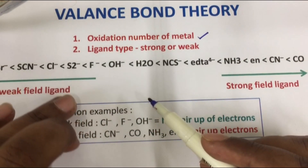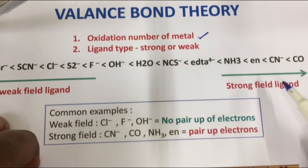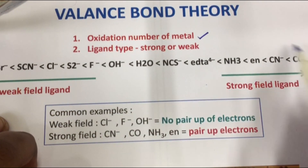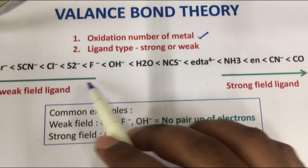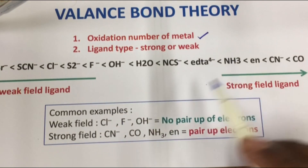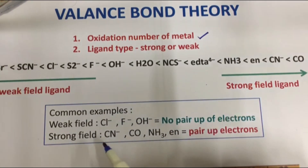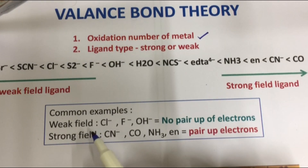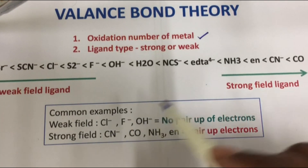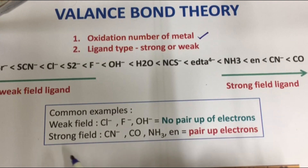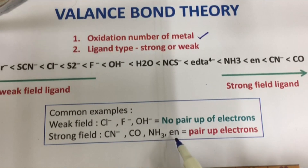On the left side of the Spectrochemical series, we have the weak field. On the right side, we have the strong field. On the strong field side, we have ligands like cyanide (CN⁻), CO, NH₃, and ethylenediamine.